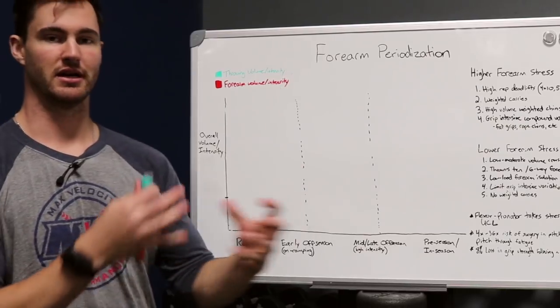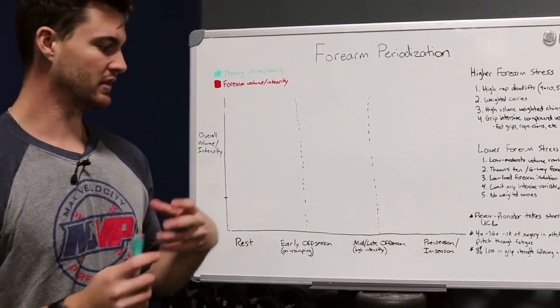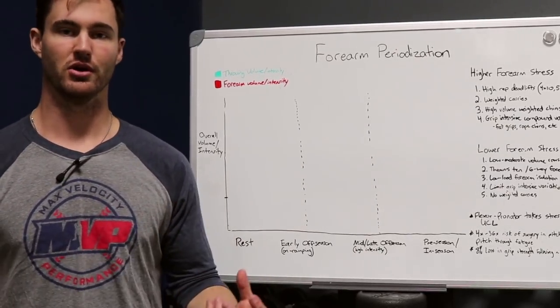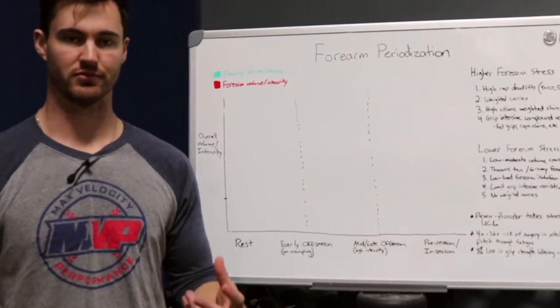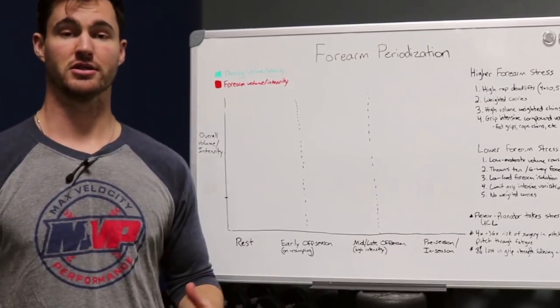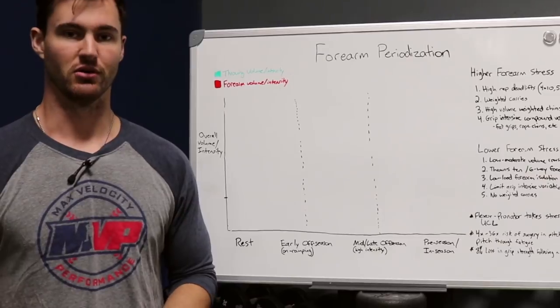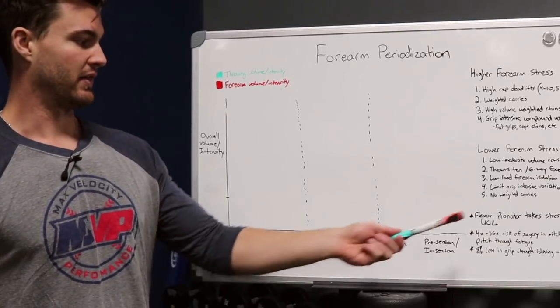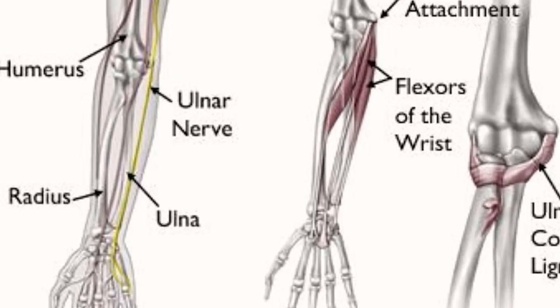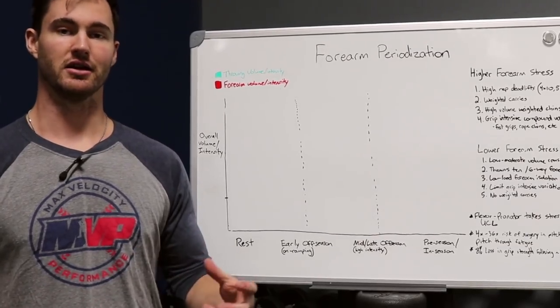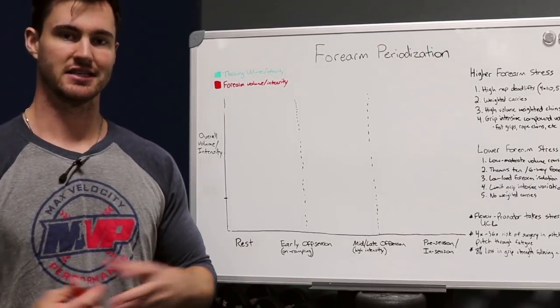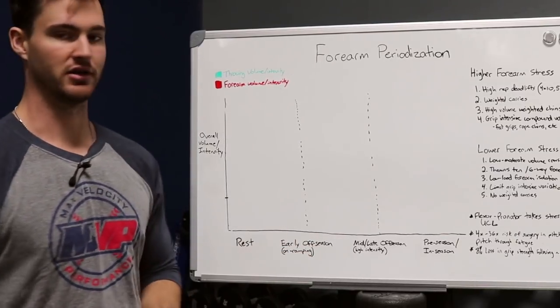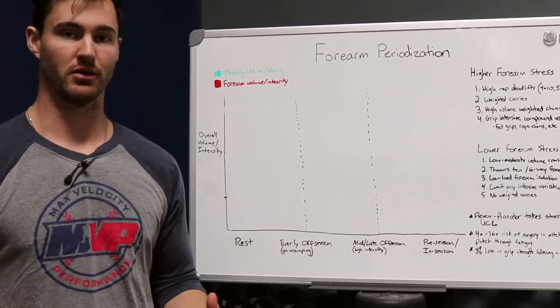But I'm going to talk about how you periodize grip training. This is important because we know that the forearms and specifically the flexor pronator are crucial in terms of injury prevention. Studies have shown that the flexor pronator mass is able to take stress off the UCL during high valgus loads. So the stronger the forearms, the stronger the flexor pronator mass in theory and all else being equal, the less loading that there should be placed on the UCL during throwing. So it's important to have strong forearms.